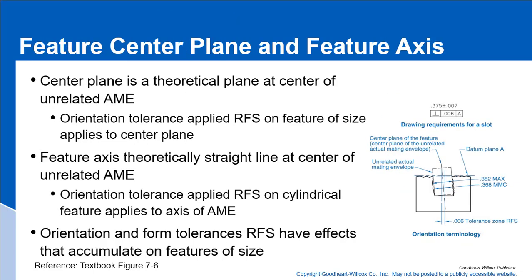Regardless of feature size, we first have to maintain that our part is within the feature size. Then we find the actual median points — the min and max points across the surface — to establish the center plane, and we must ensure it falls within the tolerance zone. RFS is a much more difficult tolerance to hold and to check, which is why we use MMC as much as we can, but we need to be able to deal with RFS tolerances as well.